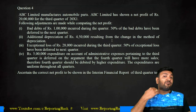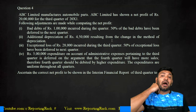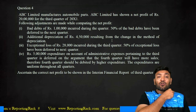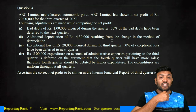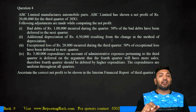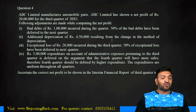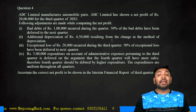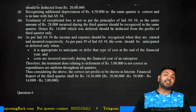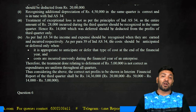5 lakhs expenditure on administrative expenses pertaining to the third quarter has been deferred to the fourth quarter, which will have more sales. These expenditures are uniform throughout all quarters, so this kind of deferral is not possible — reduce by 5 lakhs. Therefore the answer is 14 lakh 36,000, which should be the profit reported during the interim period of the third quarter.